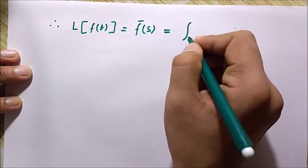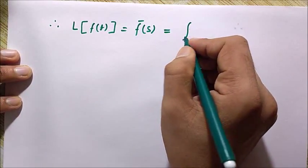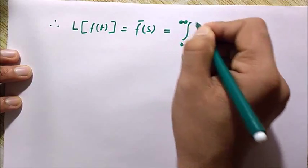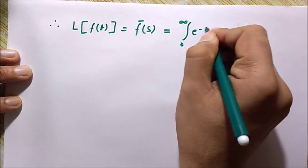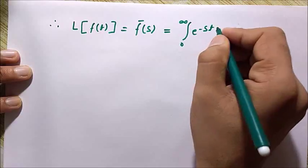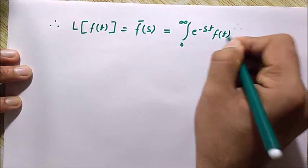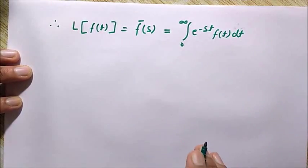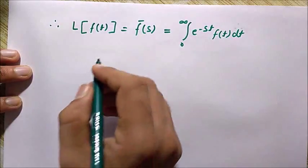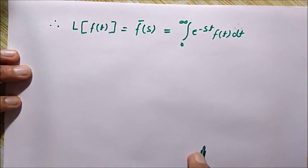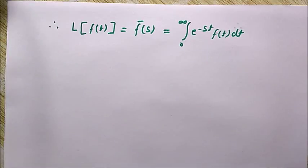Here s is a complex number frequency parameter, and s can be defined as sigma plus j omega.